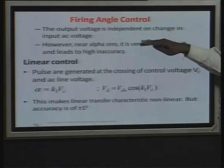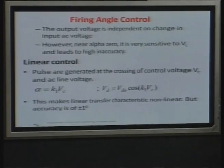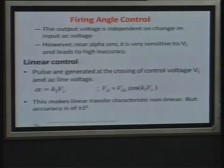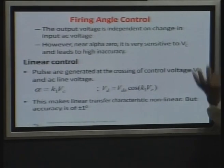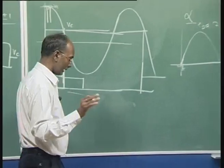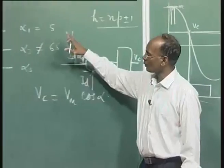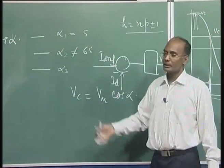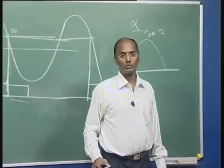In the zone near alpha = 0, sensitivity is very high — even a small error in V_C gives a huge change in degrees. This V_C change gives high inaccuracy, especially when alpha is 0. The linear control has non-linear output voltage but the error is within 1 degree. These two schemes were used in the old mercury arc valve stations and are no longer used, because individual control introduces inter-harmonics and uncharacteristic harmonics, and may even lead to harmonic instability.